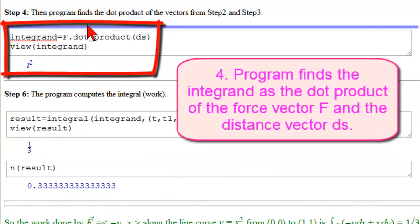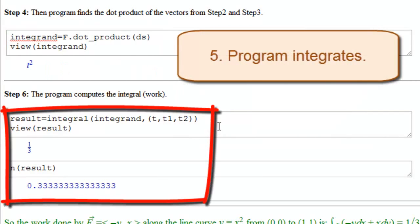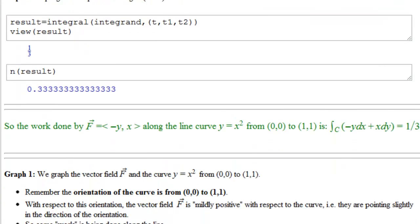In step 4, we tell it, find the dot product for us. So it finds the dot product of the vector f, which is now in t, and the vector ds, which is also now in t. And we get our integrand, which was t squared. We tell it, integrate from t1 to t2. We get 1 third, with the numeric result of 0.333.